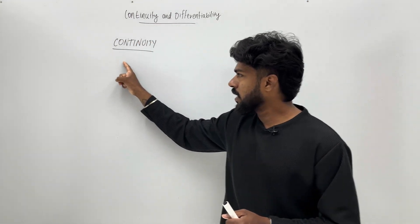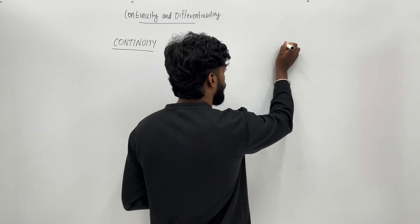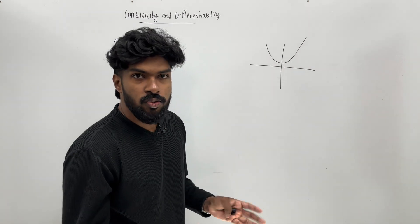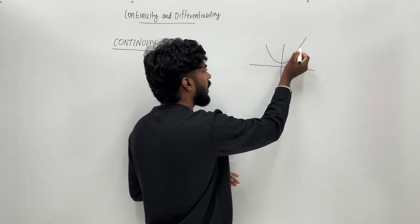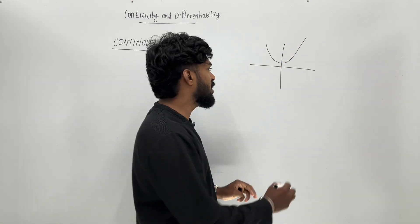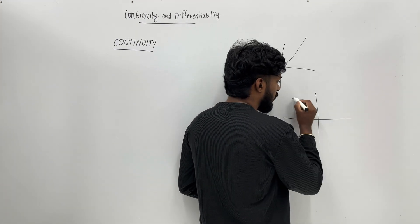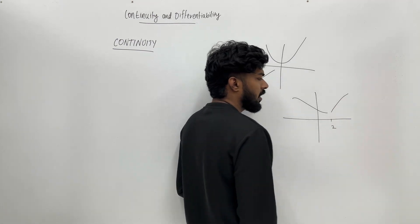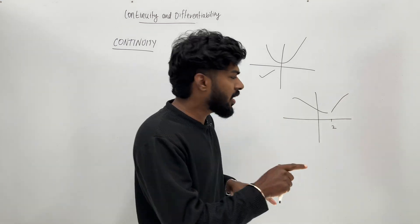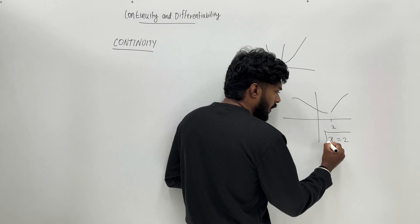What is continuity? Continuity is simple. One function is a graph. The graph is continuous. If you look at that function, this function is continuous. In this instance, the function is continuous.